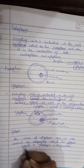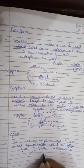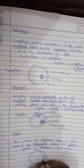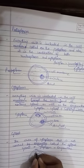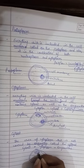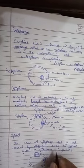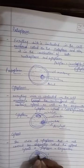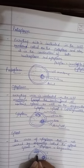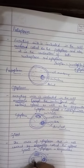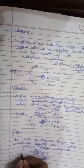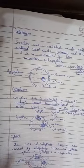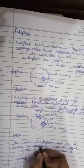Now let's go to the diagram for cytosol. For example, this is an animal cell. This is the cell membrane, this is the nucleus, and these are the organelles. The area within the cell membrane excluding the organelles is the cytosol, while the whole area excluding the nucleus is the cytoplasm. So these two are different terms and we need to understand that.